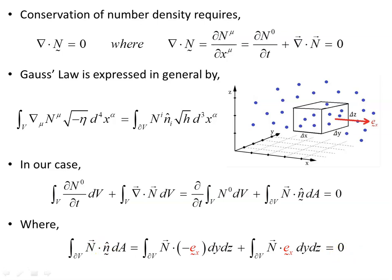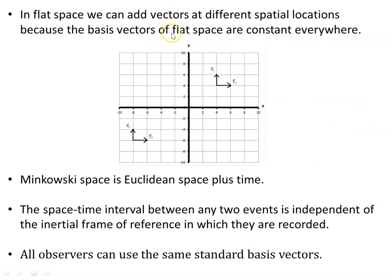In flat space, we can add vectors at different spatial locations because the basis vectors of flat space are constant everywhere. On the previous slide, that addition — one vector pointing in the opposite direction of the other, both multiplied by the same flux — means no particles are created or lost. Even though they're separated spatially across the x-direction, we can still add them because the basis vectors are the same across this space. Minkowski spacetime is Euclidean space plus time, and the spacetime interval between any two events is independent of the inertial frame. So all observers can add or subtract vectors, using the same standard basis vectors. All that changes are the components, multiplied by a gamma factor depending on the reference frame.